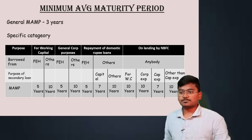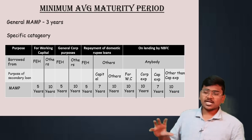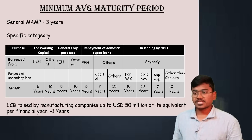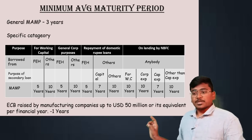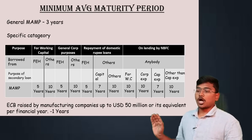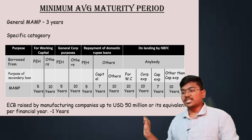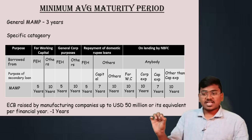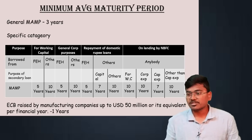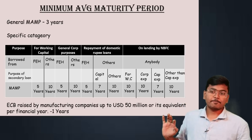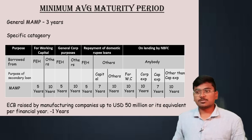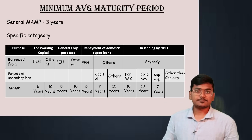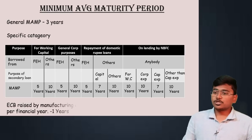Apart from these cases, there is one other special case: ECBs raised by manufacturing companies up to USD 50 million or its equivalent per financial year — the minimum average maturity period will be one year. This completes the entire concept of minimum average maturity period.